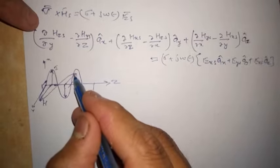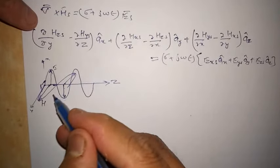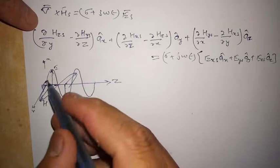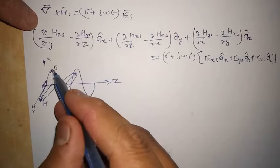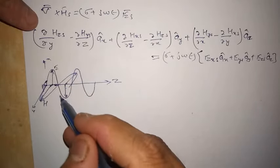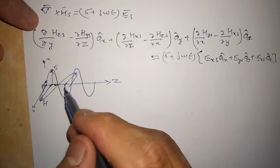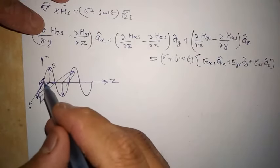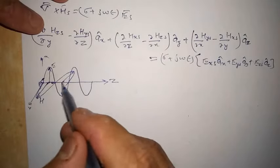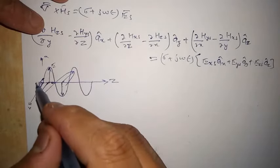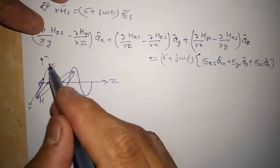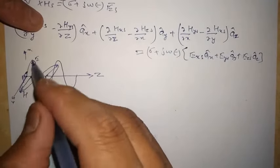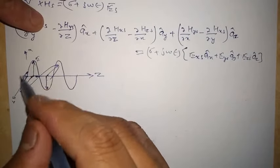The H field moves in positive y direction and negative y direction with the same amplitude, so the resultant motion in the y direction is zero. Similarly, the E field moves up and down with the same amplitude, so the resultant motion of the E field in the x direction is zero. We can say the E field and H field only vary in the z direction; their motion in x and y directions is zero, so their derivatives with respect to x and y will be zero.